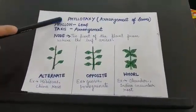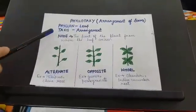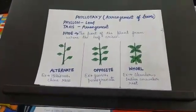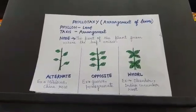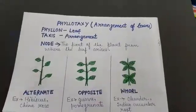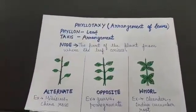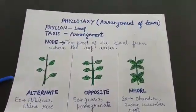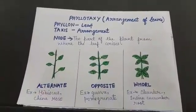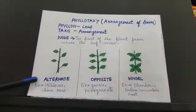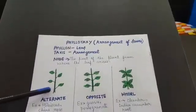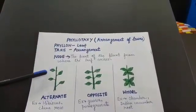Now the next topic is phyllotaxy. What is phyllotaxy? 'Phyllo' means leaf and 'taxis' means arrangement. How the leaves are arranged on the stem is called phyllotaxy, or the arrangement of leaves. The part of the plant from where the leaf arises is called a node. There are three types of arrangement of leaves. In alternate arrangement, a single leaf arises from a node and leaves are arranged in an alternate way on the stem.